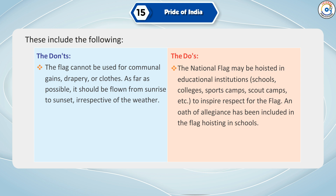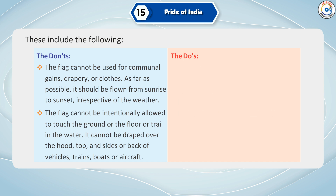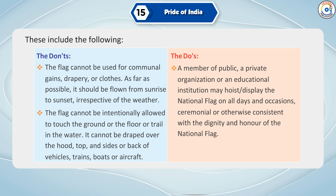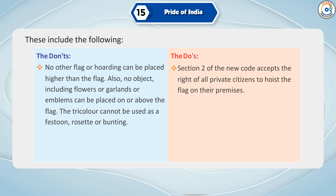An oath of allegiance has been included in the flag hoisting in schools. The flag cannot be intentionally allowed to touch the ground or the floor or trail in the water. It cannot be draped over the hood, top and sides or back of vehicles, trains, boats or aircrafts. A member of public, a private organization or an educational institution may hoist or display the national flag on all days and occasions, ceremonial or otherwise, consistent with the dignity and honor of the national flag. No other flag or hoarding can be placed higher than the flag. Also, no object, including flowers or garlands or emblems, can be placed on or above the flag. The tricolour cannot be used as festoon, rosette or bunting. Section 2 of the new code accepts the right of all private citizens to hoist the flag on their premises.